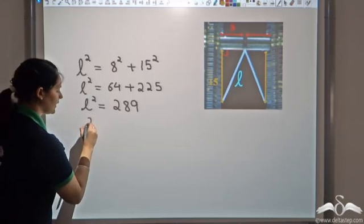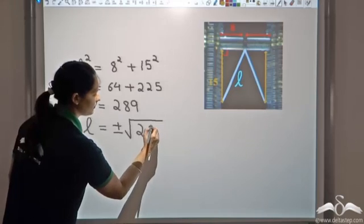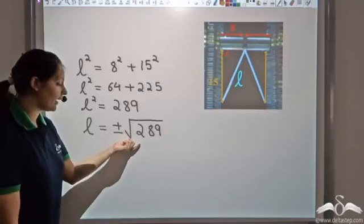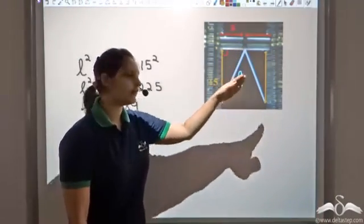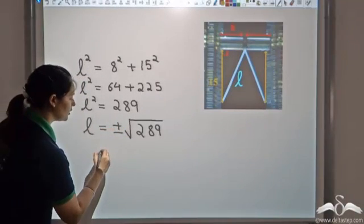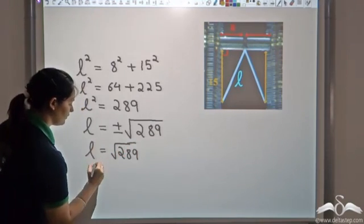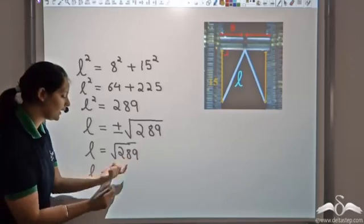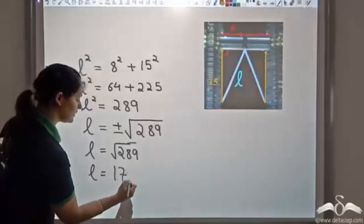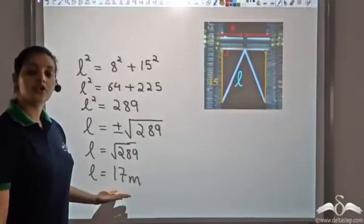Taking square roots, L = √289. The negative square root can be neglected because we want a length, which is always positive. So L = 17. Since the vertical drop is 15 meters, the length of the beam is 17 meters, found using the Pythagorean theorem.